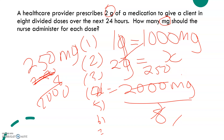Again, the question asks: a healthcare provider prescribes 2 grams of medication to be given to a client in 8 divided doses over the next 24 hours — how many milligrams should the nurse administer for each dose? First, you have to change grams into milligrams. We said 1 gram equals 1,000 milligrams, therefore 2 grams equals 2,000 milligrams. Then we divide by 8 because it asks how much each dose. If it asked how many milligrams total, the answer would be 2,000. But since it asks for each dose, the answer is 250 milligrams per dose.